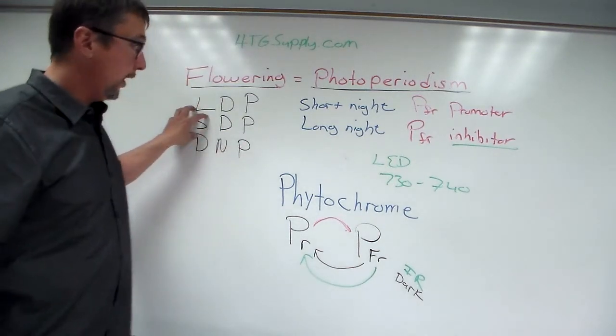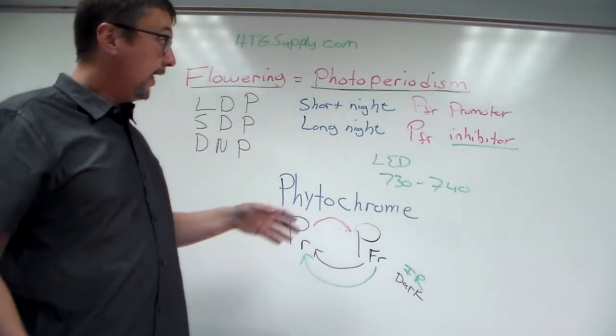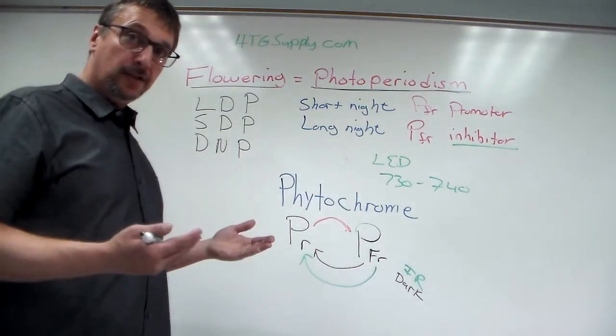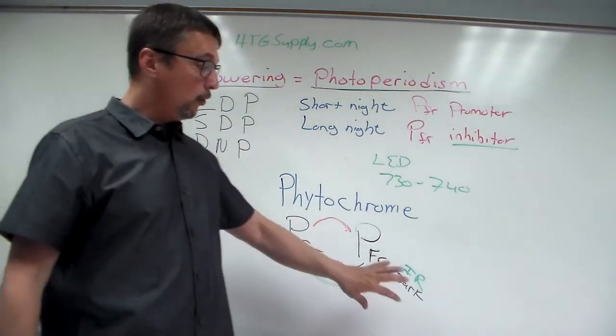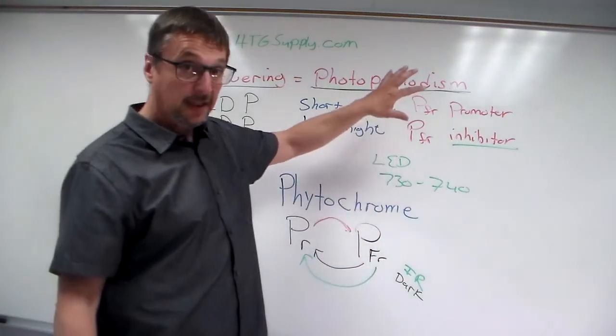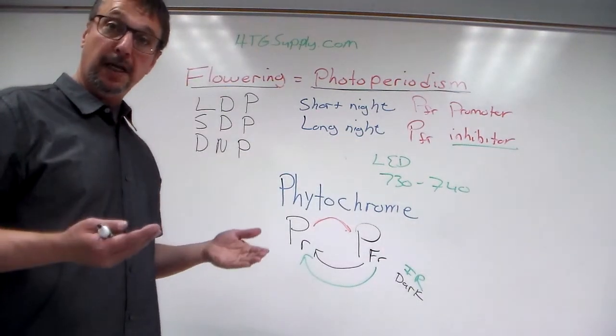So if you're growing a short day plant, plants that flower in the spring or the fall, you can get an LED that emits infrared light. And by applying a few minutes of infrared light to your plants right before the dark cycle, you're going to lower the amount of phytochrome far red. That's inhibiting flowering. So when you get rid of the phytochrome far red, your plants will flower faster and better.